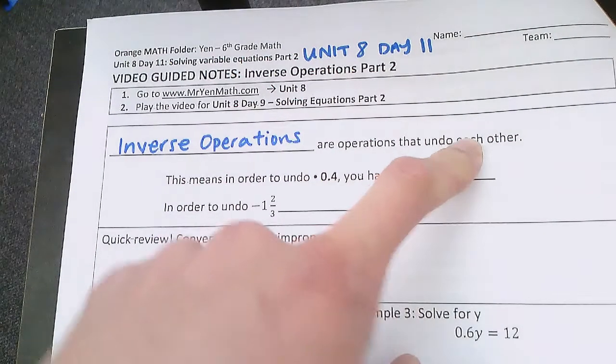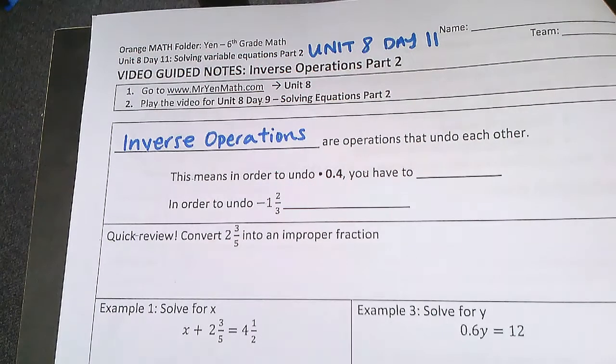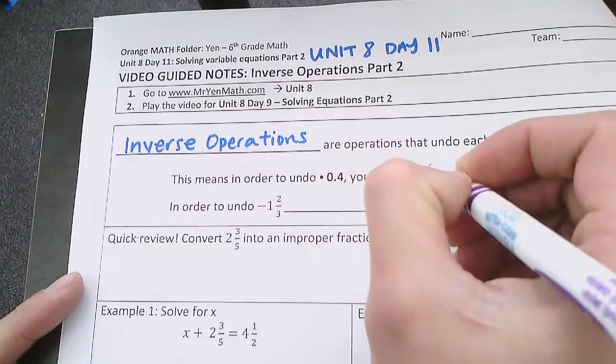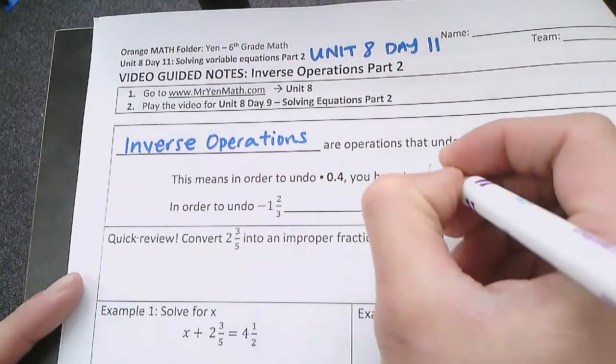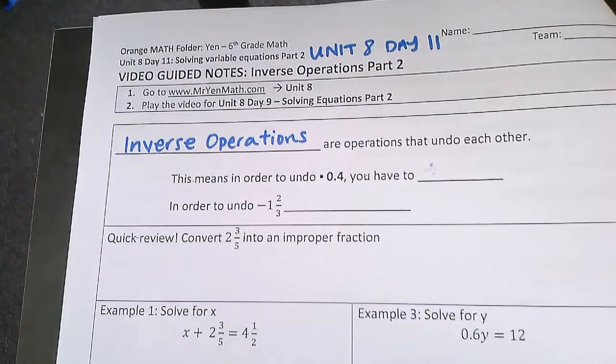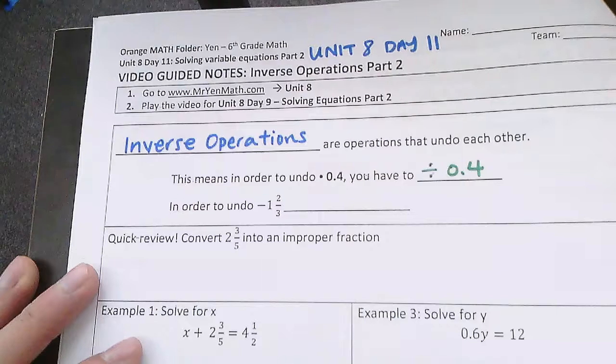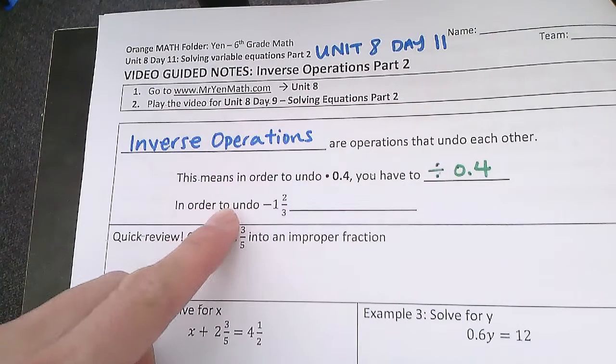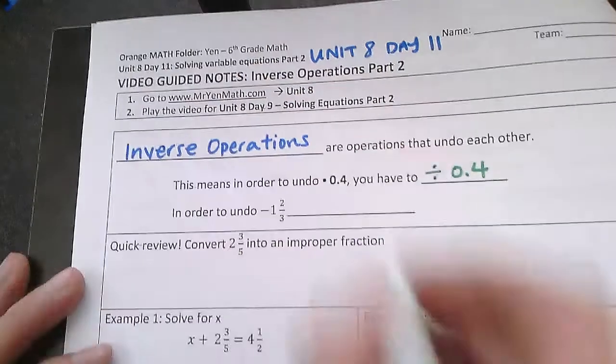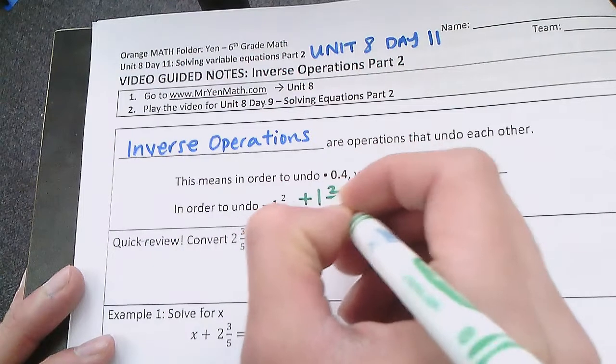This means in order to undo multiplying by 0.4, you have to do the opposite of multiplying, so you have to divide by 0.4. And in order to undo subtracting 1 and 2 thirds, you need to do the opposite of subtracting, which is adding 1 and 2 thirds.